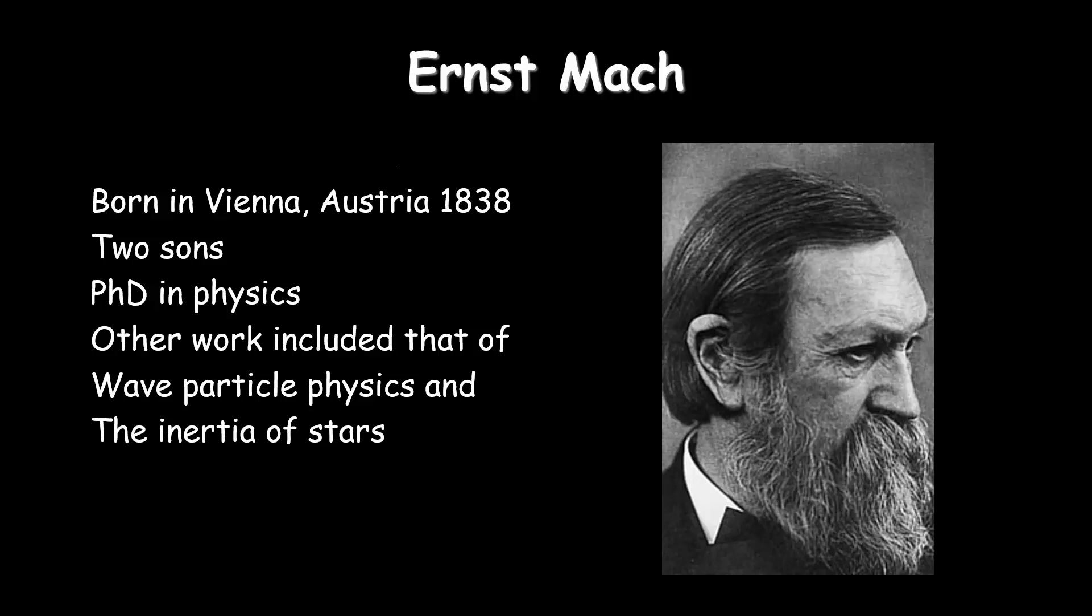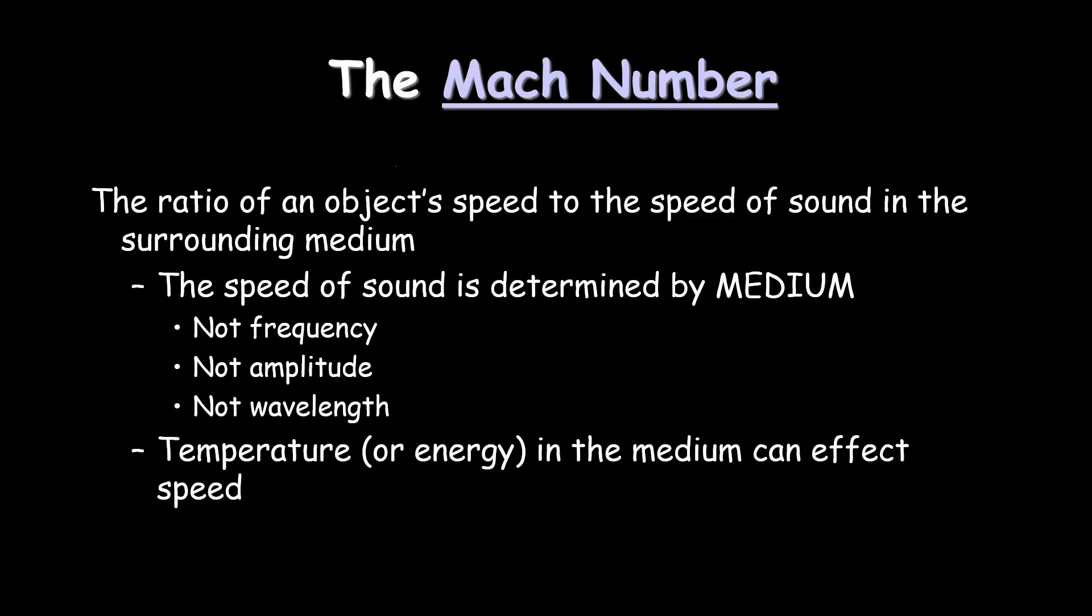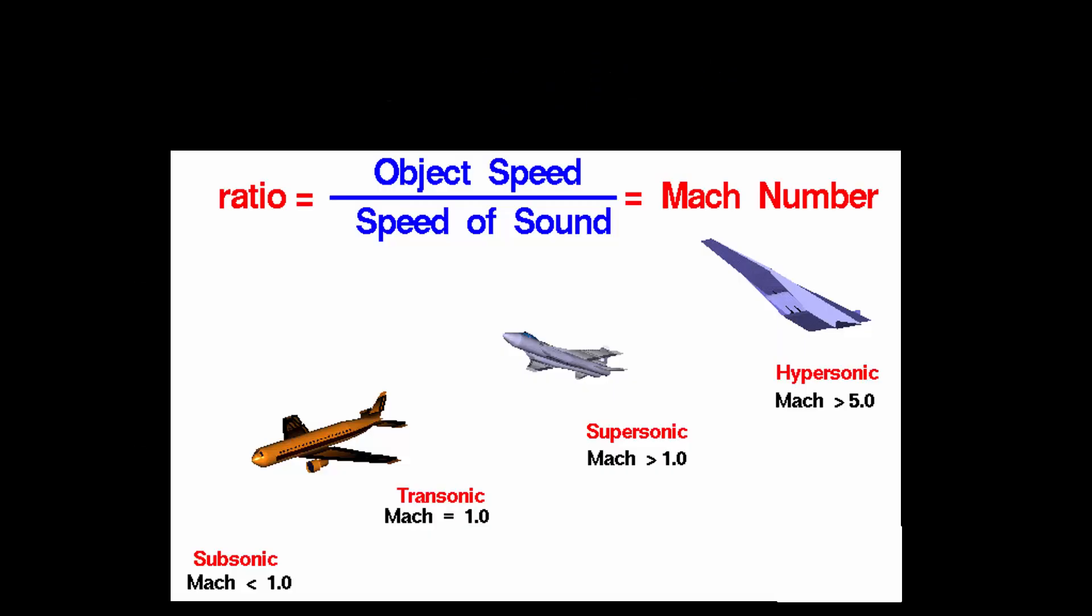Ernst Mach came up with the Mach number. Those of you who like military planes or the Concorde would know them as Mach 2, Mach 3. He was born in Vienna, Austria, had a PhD in physics. He was very sought after, a brilliant man, did a lot of work with wave particles and the inertia of stars. The Mach number is just a simple ratio - the object speed, how fast your object is going, divided by the speed of sound in the medium, equals the Mach number.